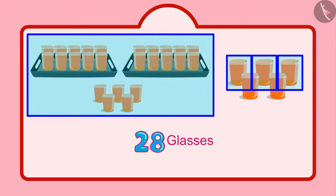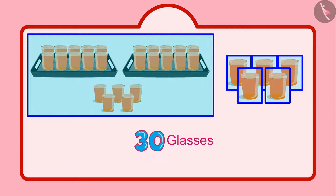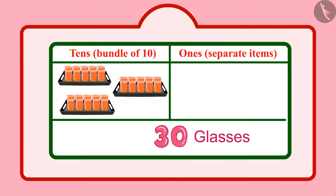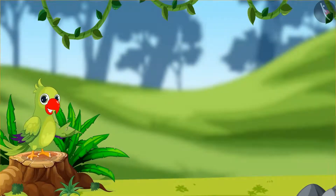That means 30 glasses, which we write like this. So children, in 30 there are three tens and zero units. So children, today 30 glasses of sherbet were made in Chotu's house.